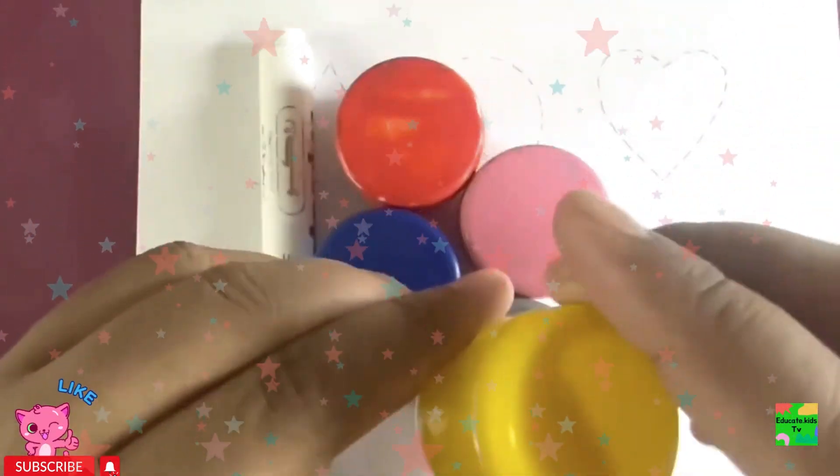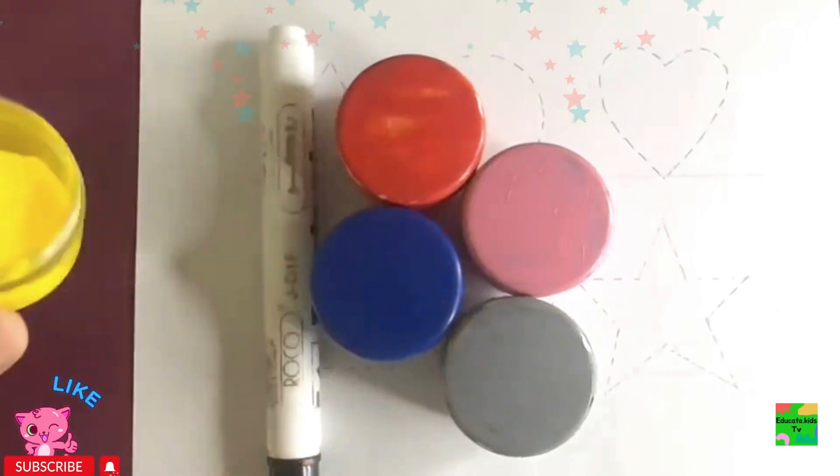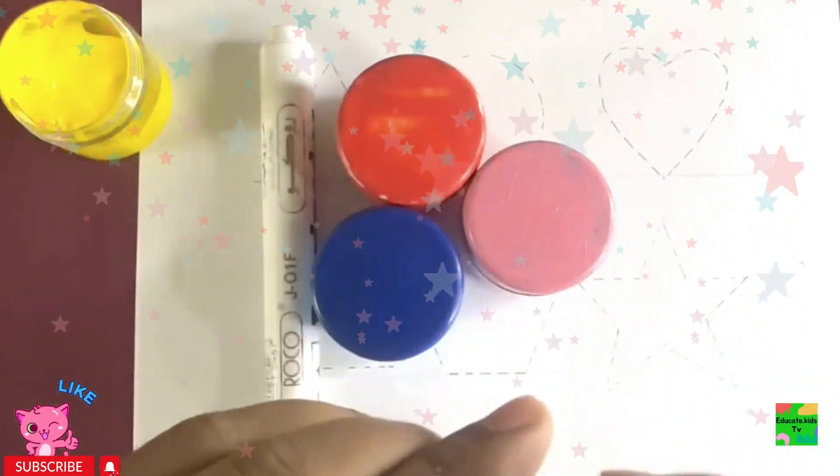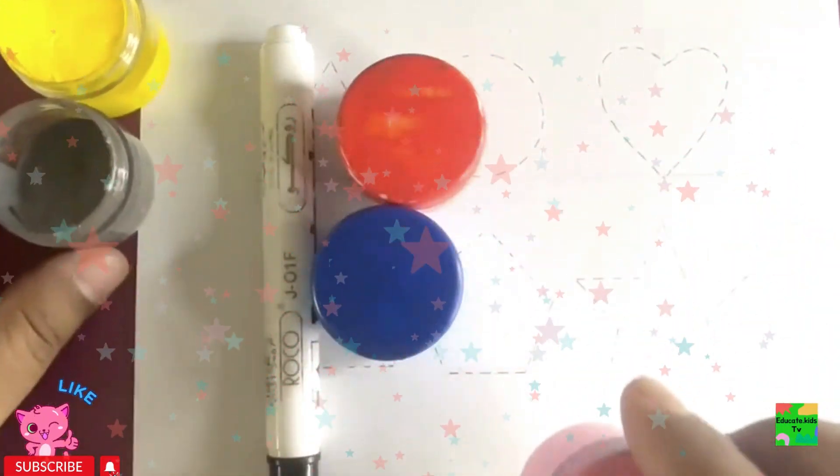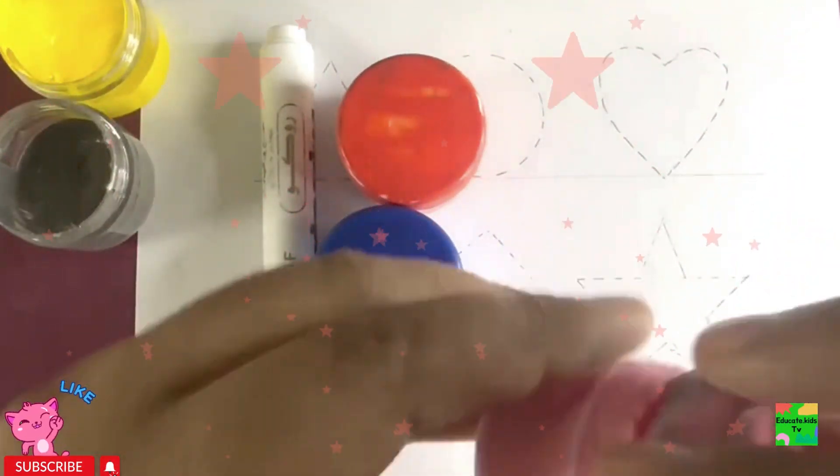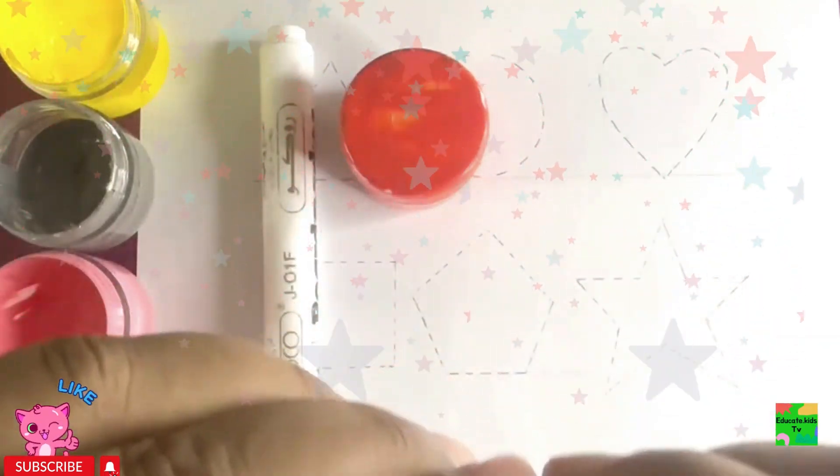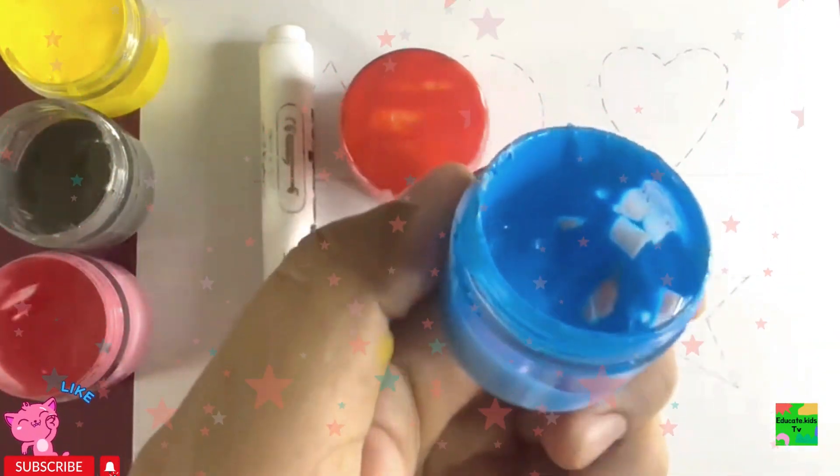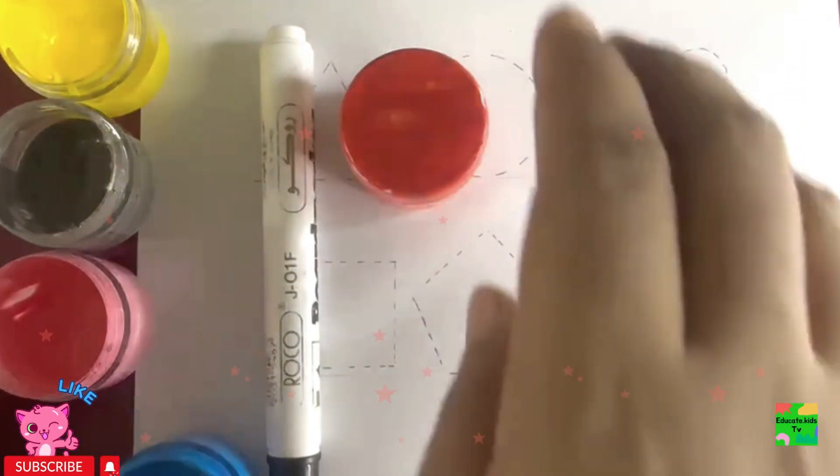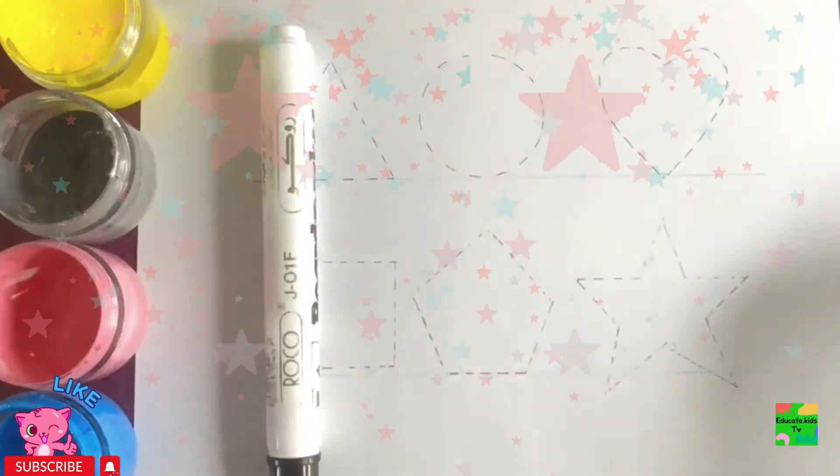Let's learn colors and then our shapes. Yellow color, gray color, pink color, blue color, orange color. Hooray!